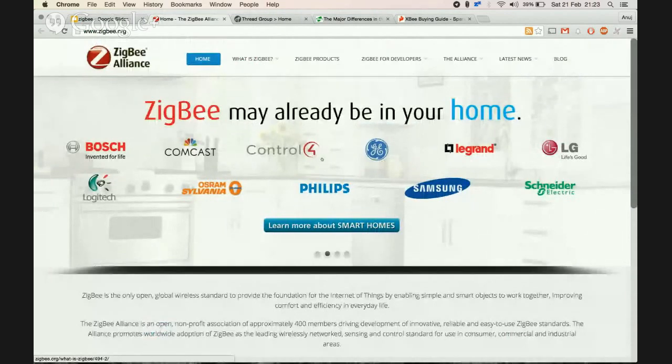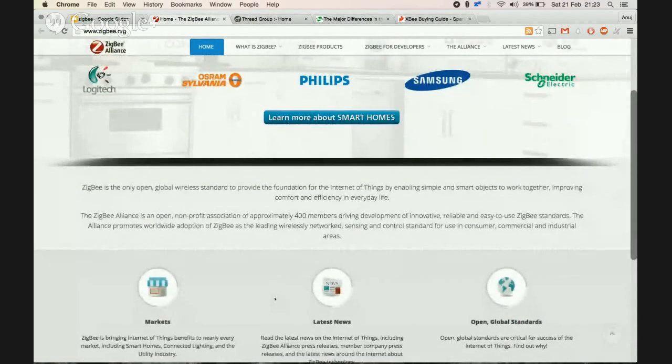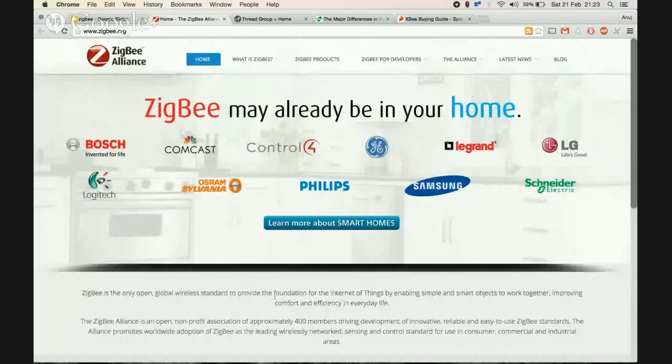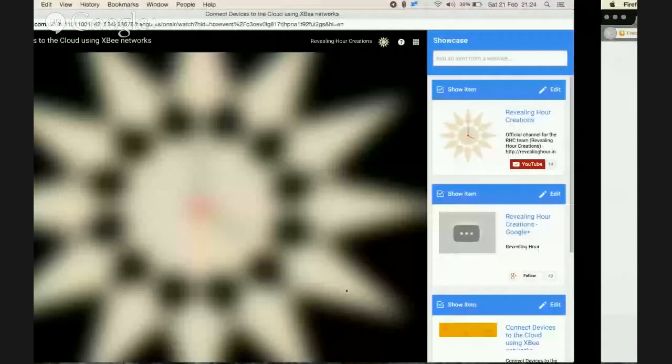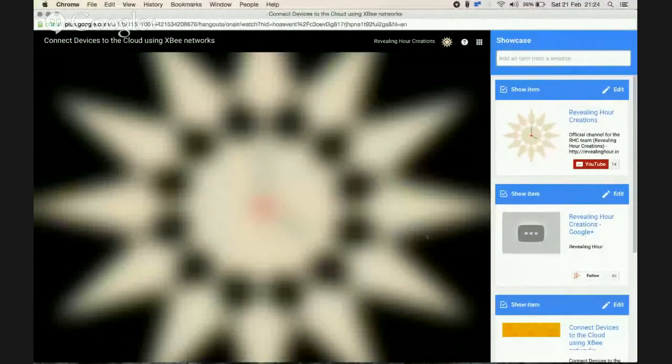Here you see Bosch, Control4, Legrand, LG, Logitech, Philips, Samsung, and Schneider—a lot of the big names are part of this ZigBee Alliance. So whatever application that you do, if you get ZigBee certified, then you become part of this big alliance and your products can work easily with these other things.